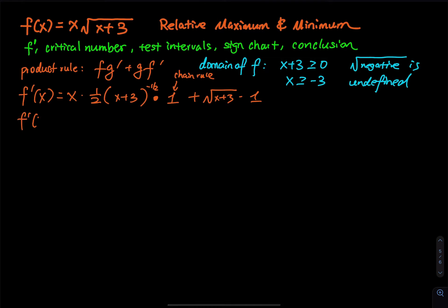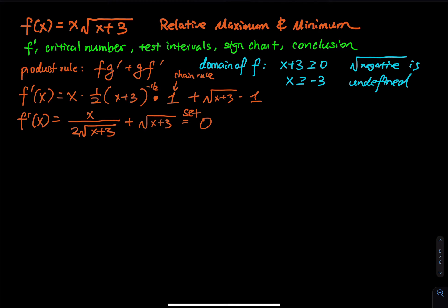So f prime of x equals x divided by 2 times the square root of x plus 3, plus the square root of x plus 3. We set that equal to 0, because that is where critical numbers occur. Let's find a common denominator: we have x divided by 2 root of x plus 3, and then multiply the second term top and bottom by 2 root of x plus 3.